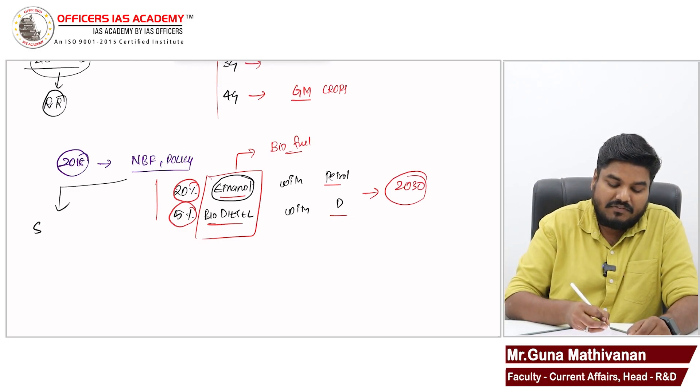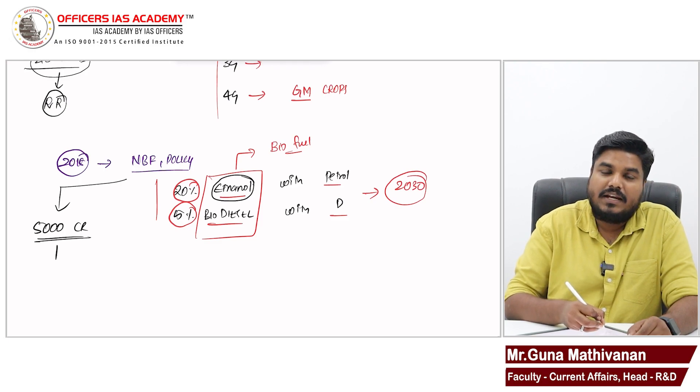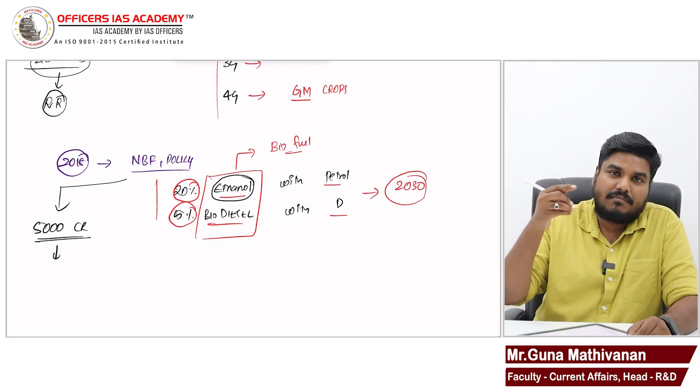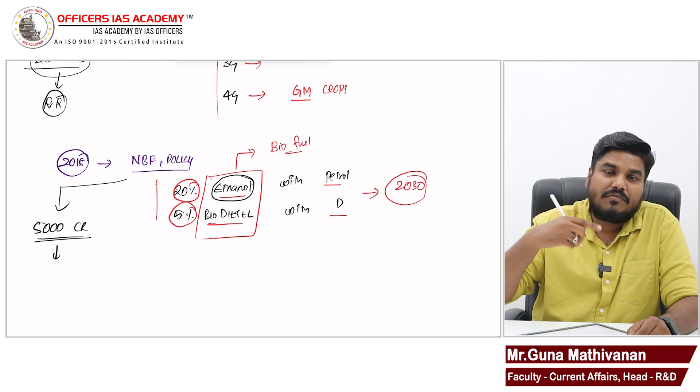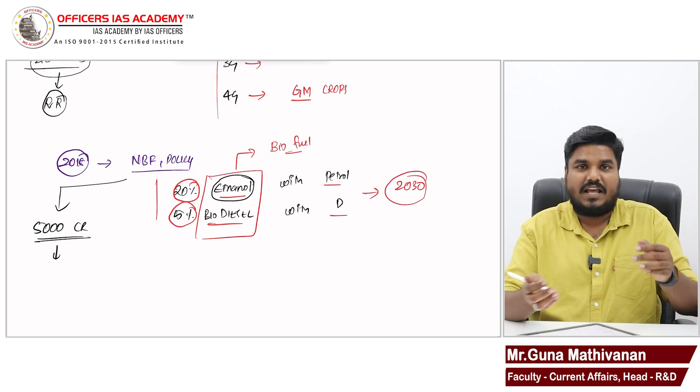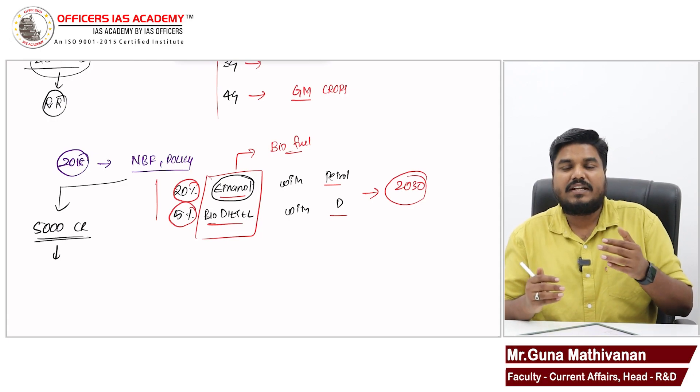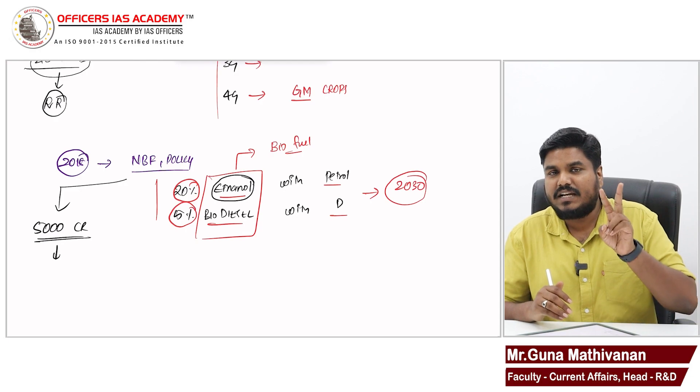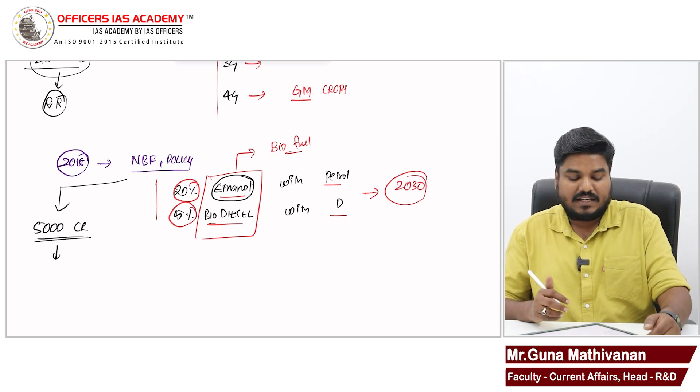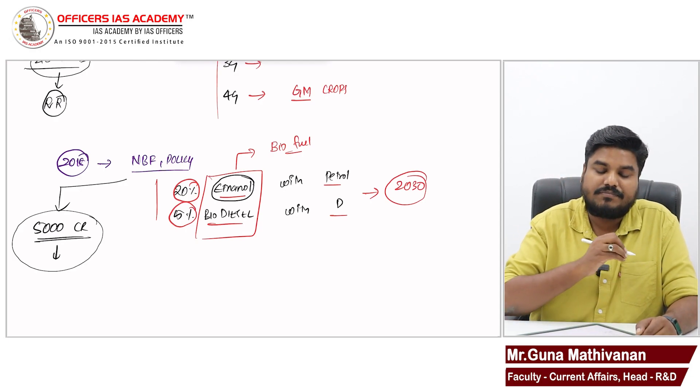This policy also emphasizes on increasing the number of biofuel refineries available in the market. So, government has allocated 5000 crores for this purpose to increase the availability of biofuel refineries. So, for setting up of refineries, particularly to produce second generation biofuel, government has allocated 5000 crores under this policy.